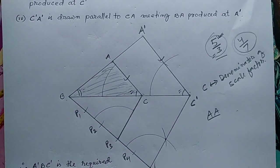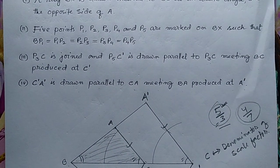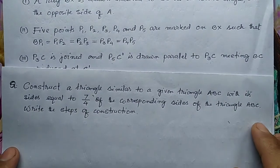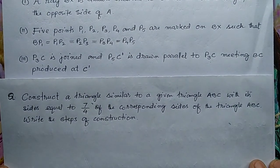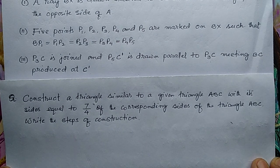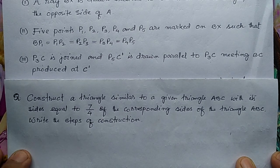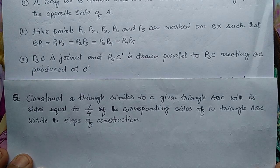I hope you have learned how to construct this type of question. Here is a homework question for you to try: construct a triangle similar to a given triangle ABC with each side equal to 7/4 of the corresponding side of triangle ABC. Write the steps of construction. That's all for this video.